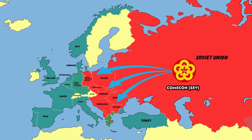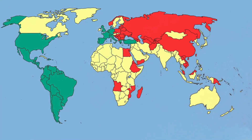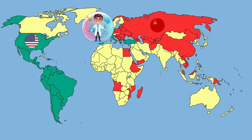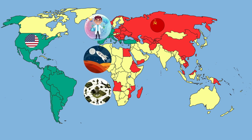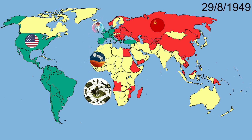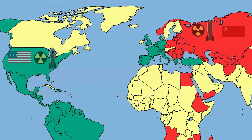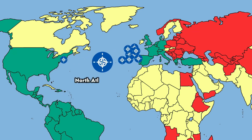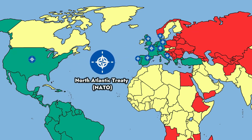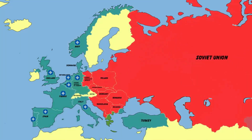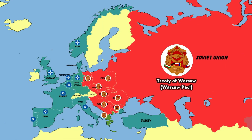The two superpowers also competed in many fields of science, technology, space, and military. On August 29, 1949, the Soviet Union successfully tested the atomic bomb, breaking the monopoly of U.S. nuclear technology. That same year, NATO was established based on the North Atlantic Treaty signed between the United States and Western European countries to combat the increasing threat of the Soviet Union. To deal with NATO, the Soviet Union established the Warsaw military alliance in 1955.